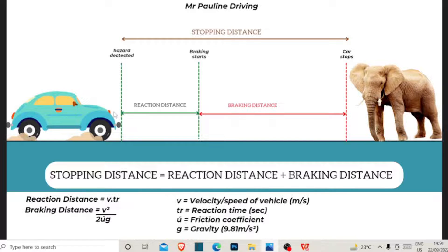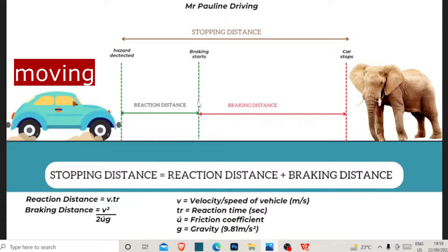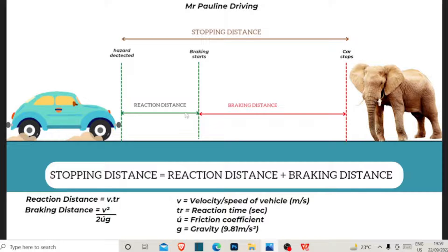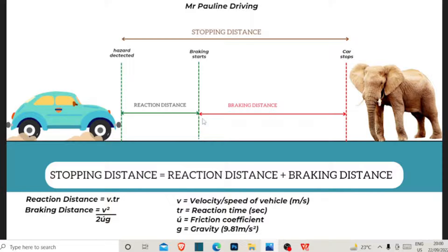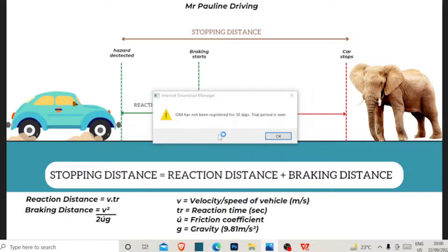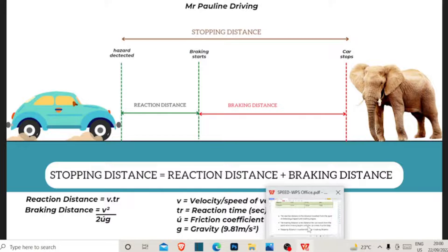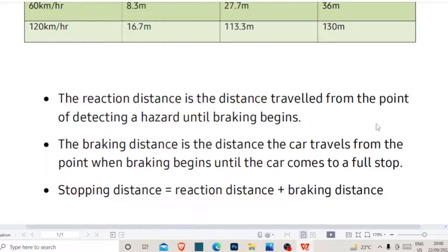Understand that the car is still moving when the driver becomes aware of the obstacle ahead. The information has to be registered in the brain, but the car is still moving. When that information is registered and the driver recognizes he needs to press the brake, that is the point the driver presses the brake. The car has moved from that detection point to the braking point — this is the reaction distance.